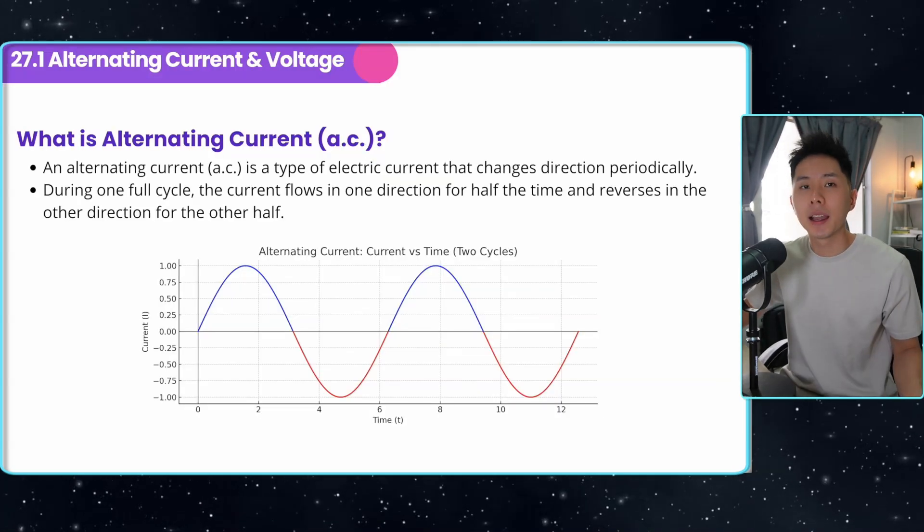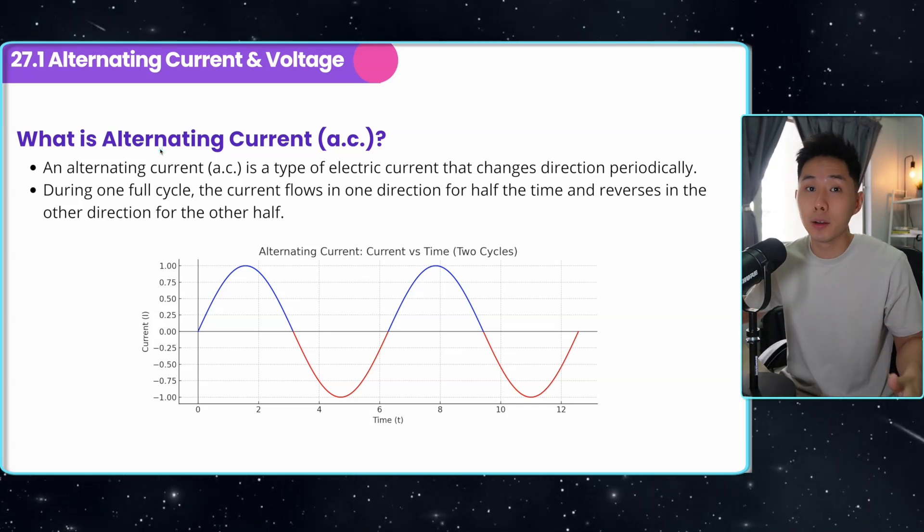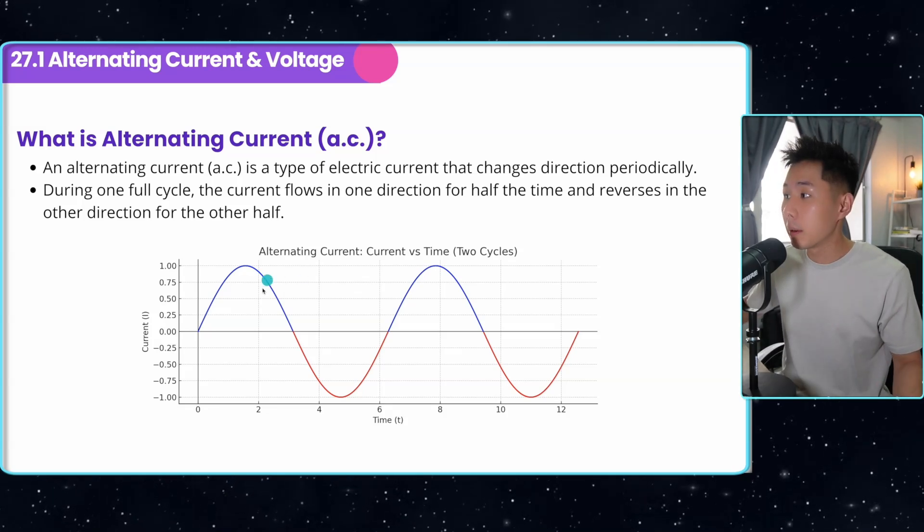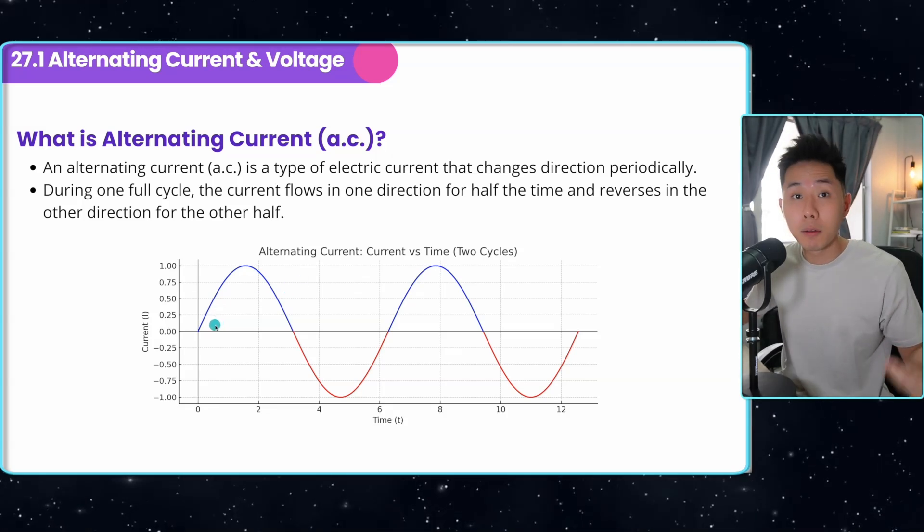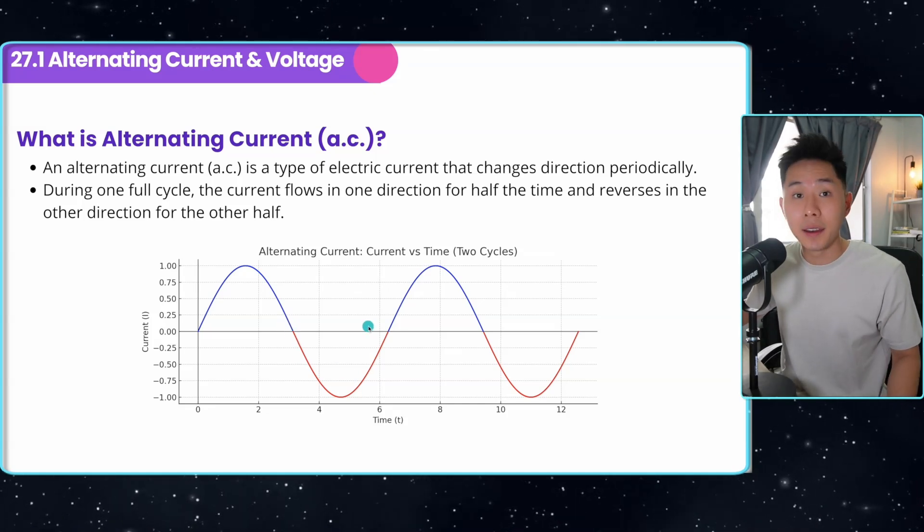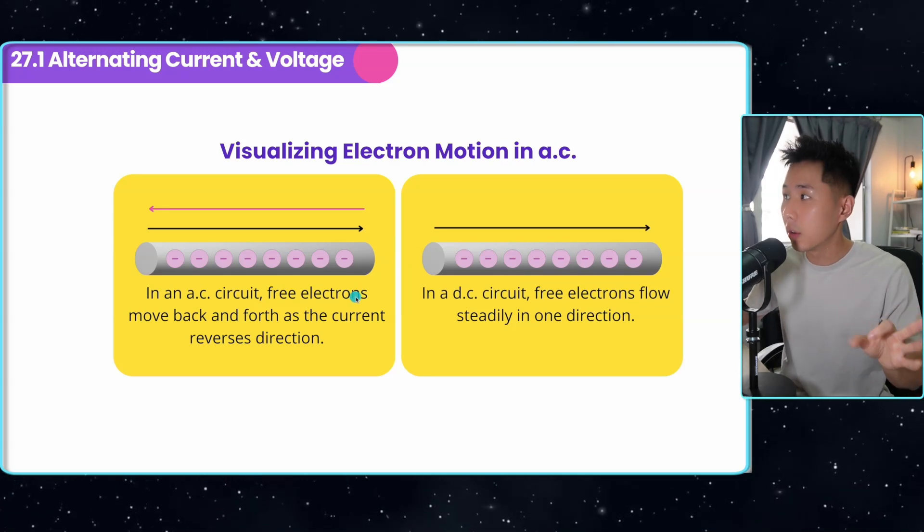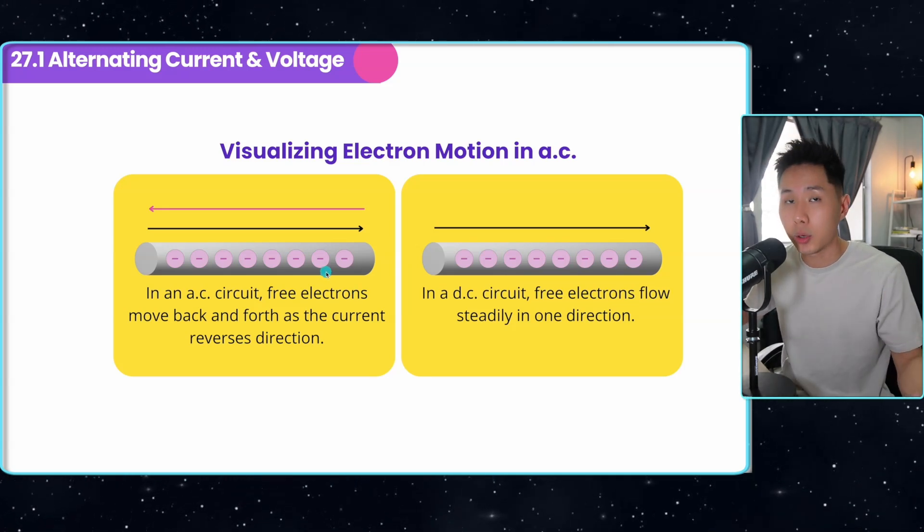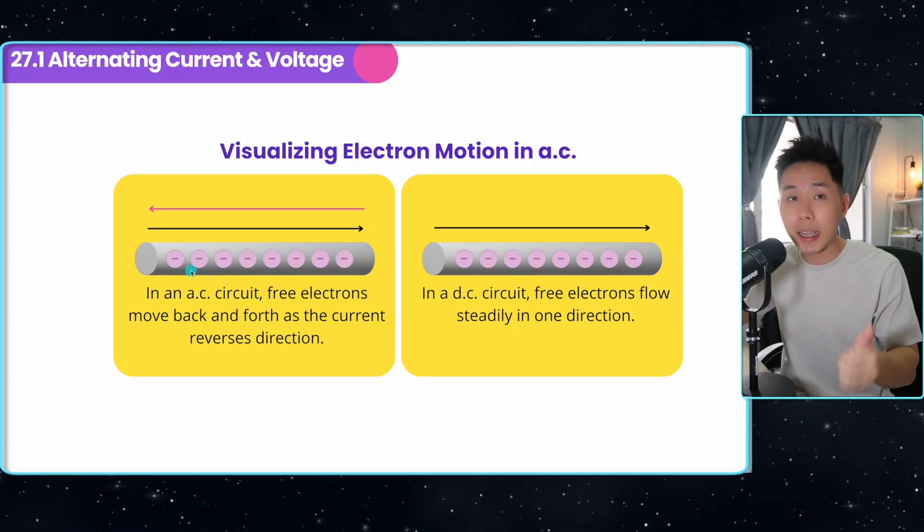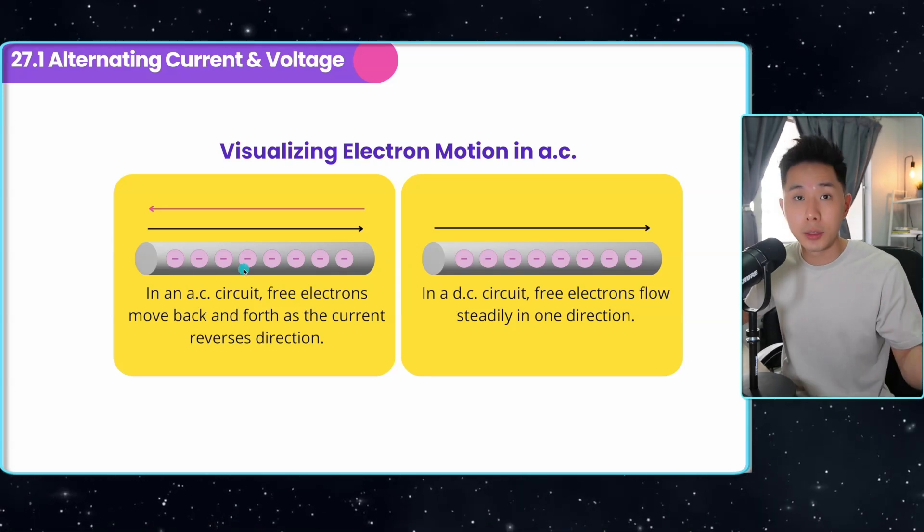Now first let's define what alternating current is. As implied by its name, it is current that flows in alternating direction. For example, for the first period of the time cycle, the current will flow in this direction. And in another half of the cycle, the current will flow in another direction. I have this diagram to help you visualize how they work. You know that current is just the flow of electron. You can just picture the alternating current as electrons that can flow in both direction. In this case, to the left and then to the right.